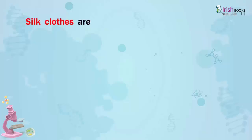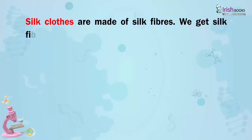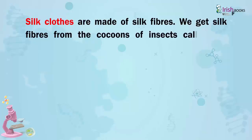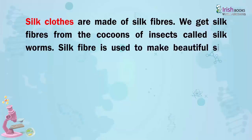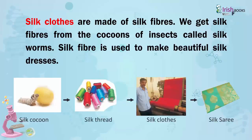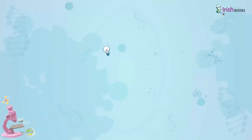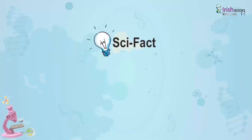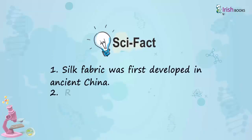Silk clothes are made of silk fibres. We get silk fibres from the cocoons of insects called silkworms. Silk fibre is used to make beautiful silk dresses. Silk fibre was first developed in ancient China.